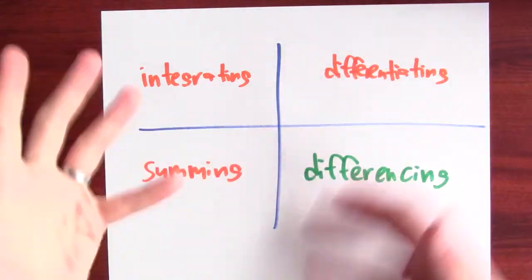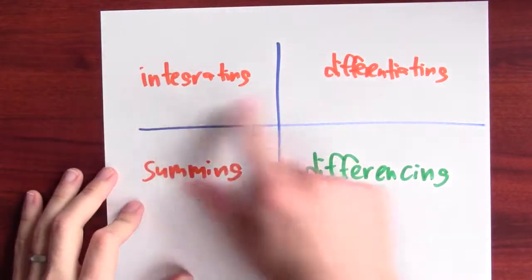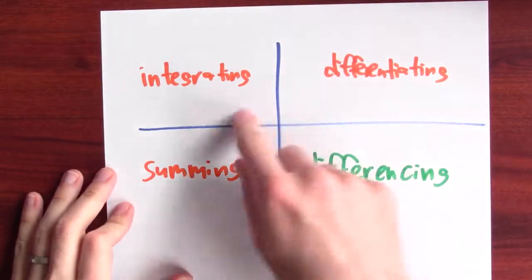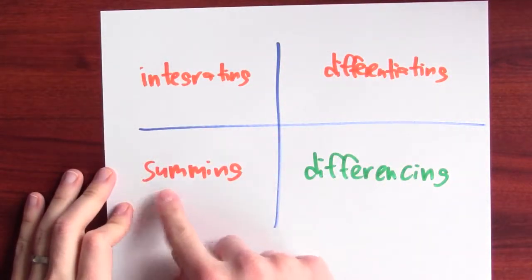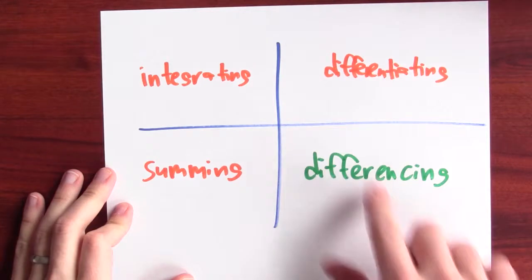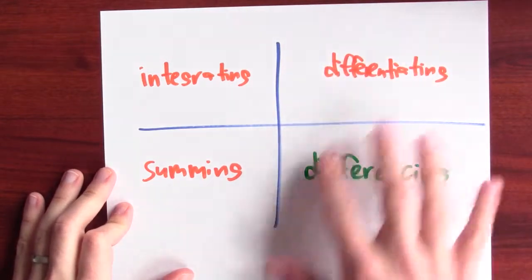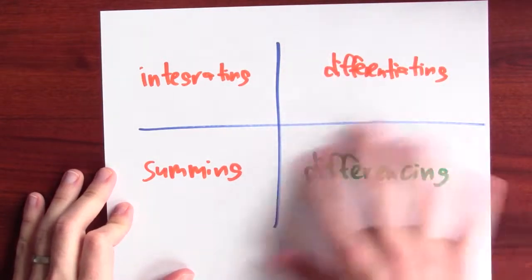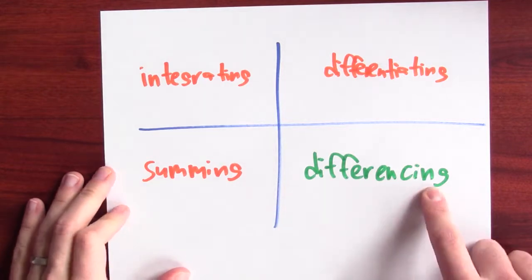So how does the fundamental theorem of calculus fit into this analogy? Here's the analogy square. I've got integrating and differentiating, and integrating is like summing. So what's the thing that's like differentiating but for the discrete world? I'm claiming it's differencing.